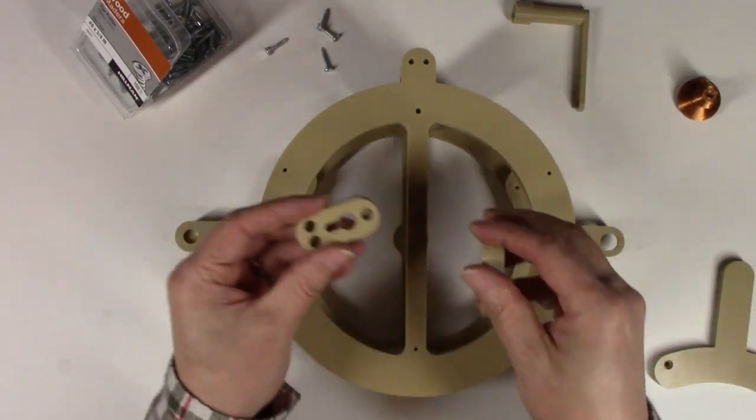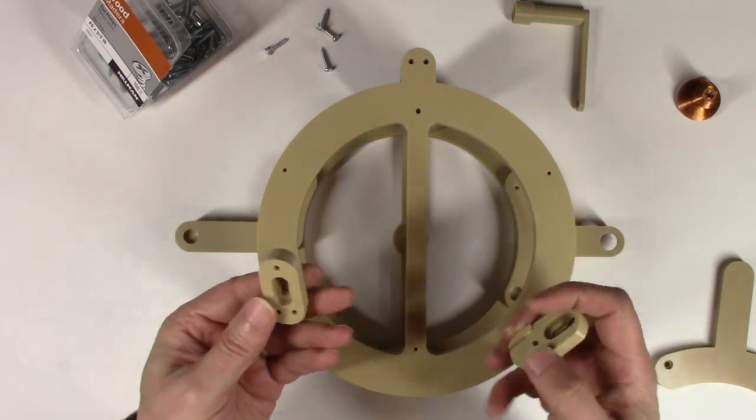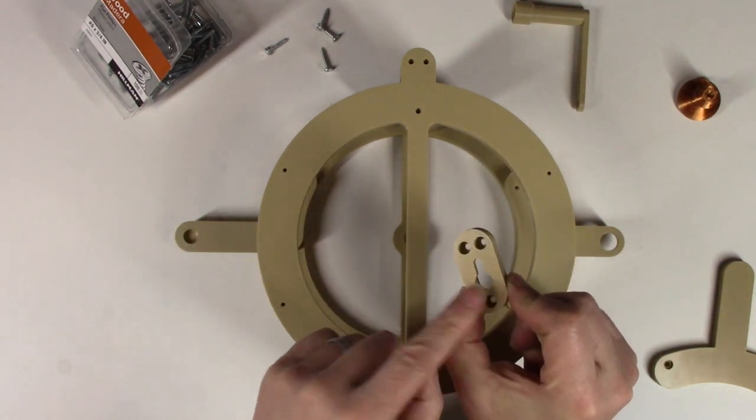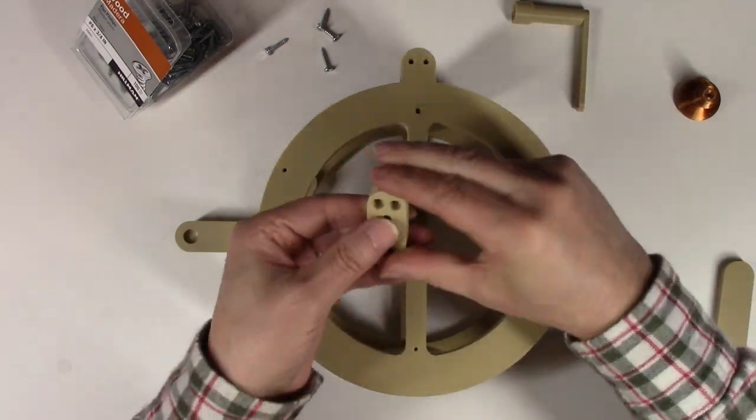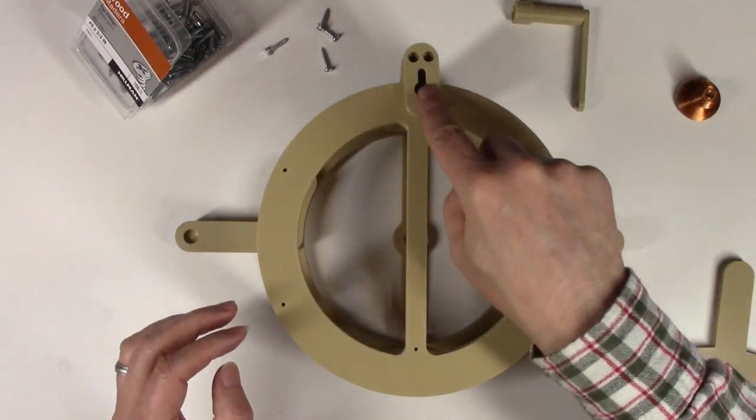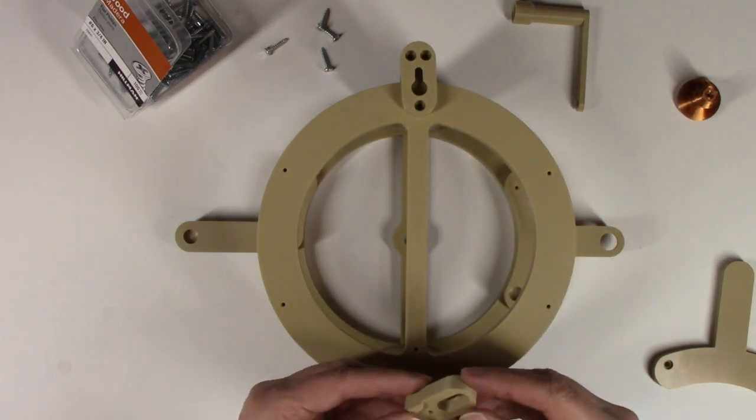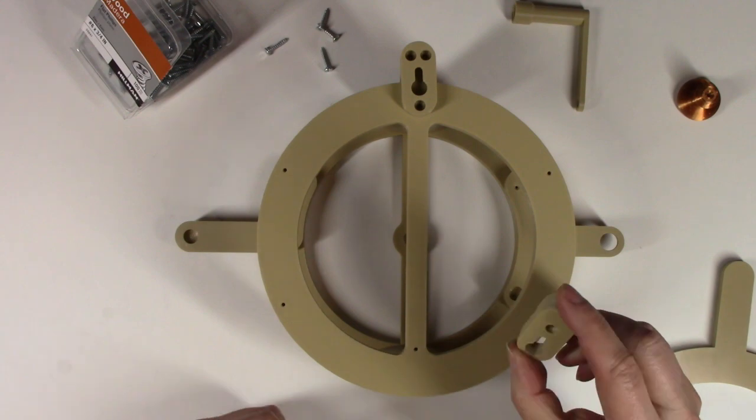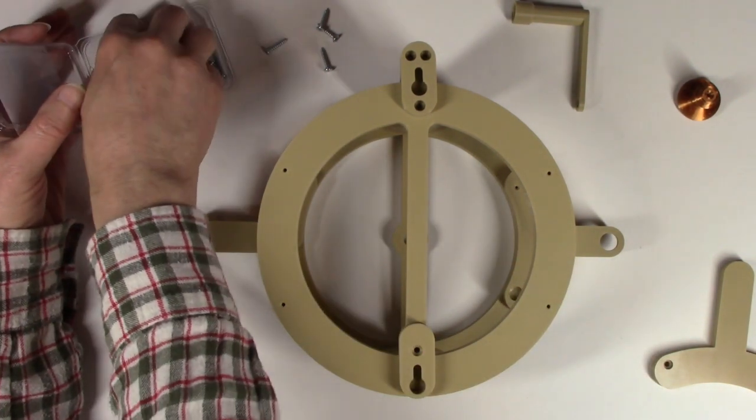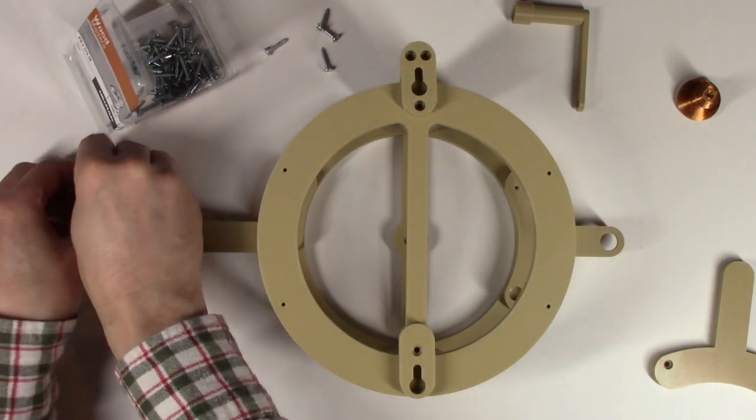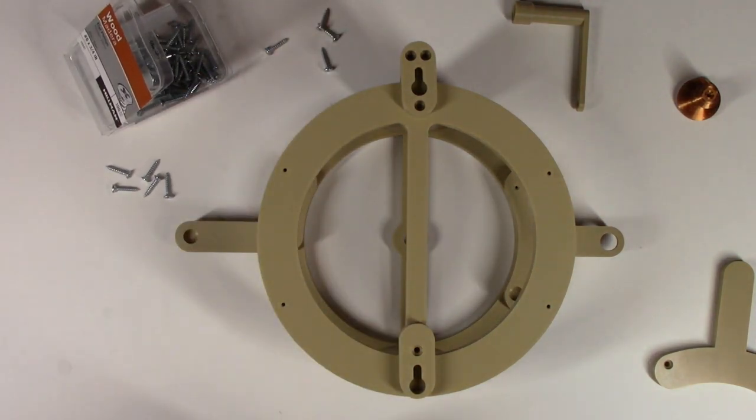There are two small brackets, keyhole hangers. One has three screw holes. That one goes in the top. That's the keyhole hanger that's going to support most of the weight of the clock. The other keyhole hanger at the bottom is really only for steadying the clock. It doesn't support any weight. It only has a single screw.